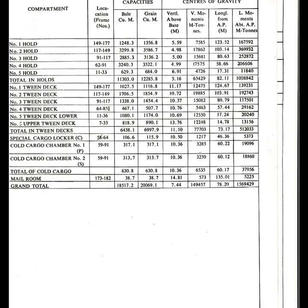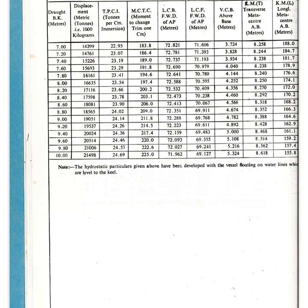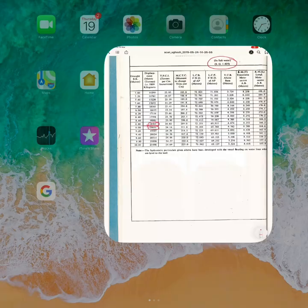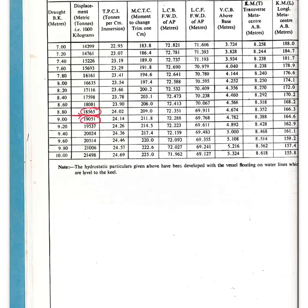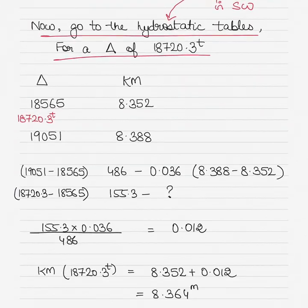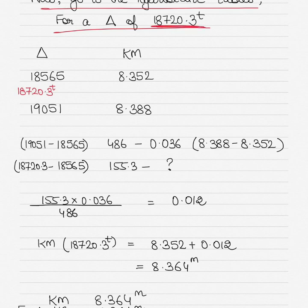Going into the hydrostatic tables, all values are for salt water specific gravity 1.025. The displacement of 18720.3 tons lies between 18565 and 19051 in the table. To find KM — since you have KG and need KM — the KM value at 18565 is 8.352 and at 19051 is 8.388. You use these two values to interpolate and find the KM for your required displacement of 18720.3 tons.